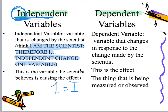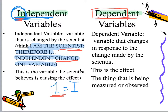Now the dependent variable — this is the other variable. The word 'dependent' means it depends on, or is responding to, the change made by the scientist. The independent variable: I independently change one variable because it's a controlled experiment and we want to know the one thing causing the effect. The dependent variable is the thing we are measuring or observing — it depends on and responds to the independent variable.